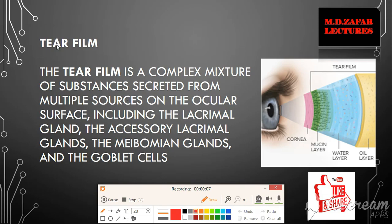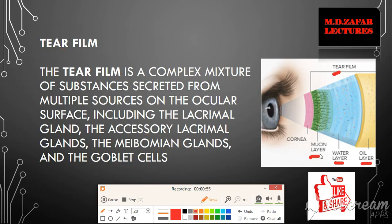The tear film is a complex mixture of substances secreted from multiple sources: the lacrimal glands, the accessory lacrimal glands, the meibomian glands, and the goblet cells. Tear film has three layers: the mucin layer, the aqueous layer, and the oily or fatty layer. The aqueous layer is the thickest, the mucin layer is the thinnest, and the fatty layer prevents overflow of the tear film and lubricates the eye.